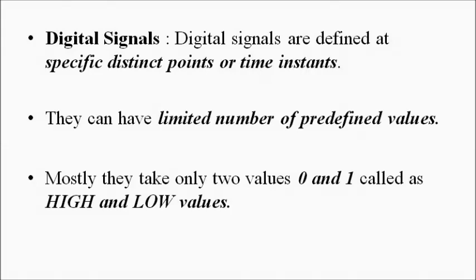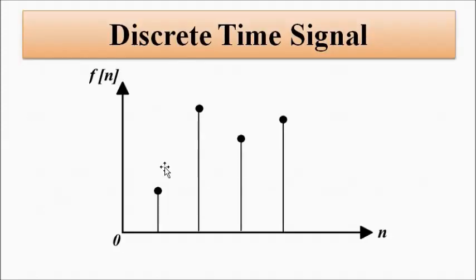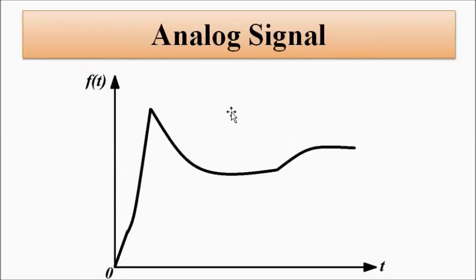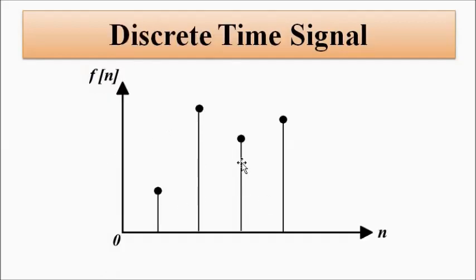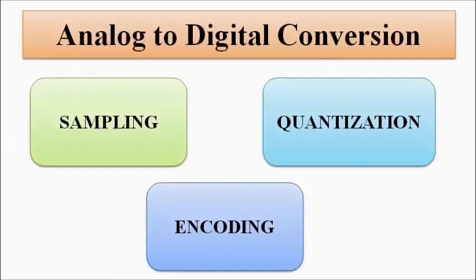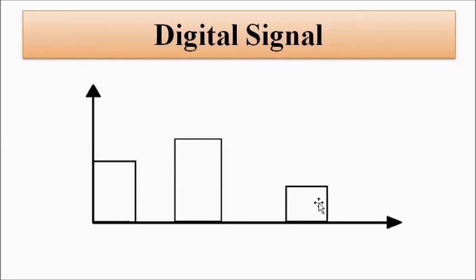Digital signals are defined at specific instances of time and are obtained from discrete-time signals. A discrete-time signal is obtained by a process called sampling, where samples of the analog signal are taken at fixed intervals of time, following the sampling theorem where the sampling frequency must be greater than or equal to twice the maximum signal frequency. After sampling, quantization and encoding are performed for analog-to-digital conversion, yielding the digital signal in the form of pulses.